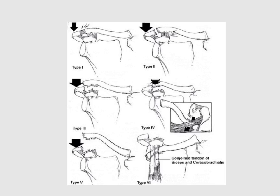Acromioclavicular injury was classified into six types. Type 1 is just a simple sprain to the acromioclavicular joint, without any tearing. Type 2 will have a tear in the acromioclavicular ligament only. Type 3 will have a tear in both the acromioclavicular joint and the coracoclavicular ligament.